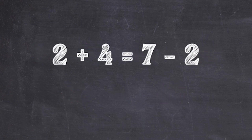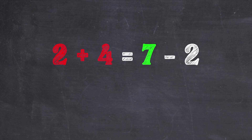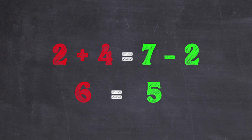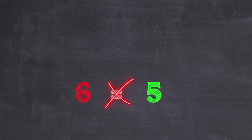You try this one: 2 plus 4 equals 7 minus 2. Think about whether the equation is true or not. Let's look at the left-hand side: 2 plus 4 is 6. Now onto the right-hand side: 7 minus 2 is 5. 6 is not equal to 5, so the equation 2 plus 4 equals 7 minus 2 is not a true equation. In other words, this equation is false.